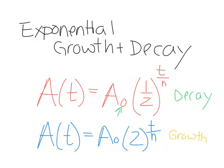Which makes sense, right? The decay one has a half because we know that graph is going to look like this. And then the growth one is going to look like this.